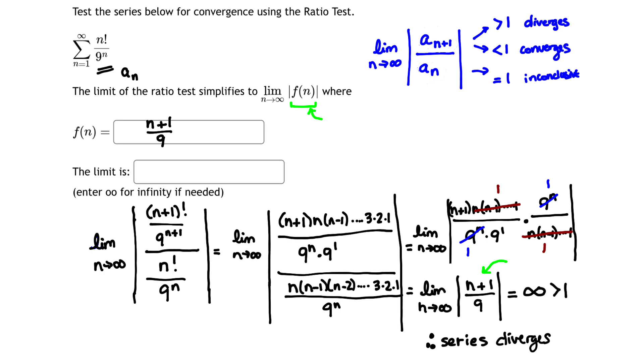Once we take the limit as n goes to infinity, we get infinity, and so you want to enter infinity in for the limit. And because it's greater than 1, you can make the conclusion that the series therefore diverges.